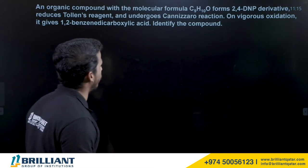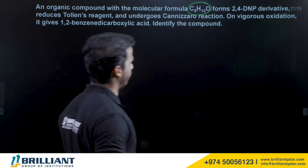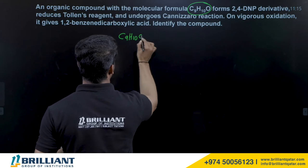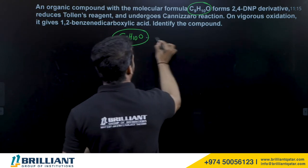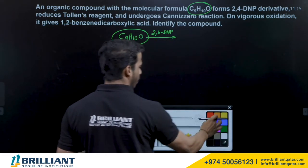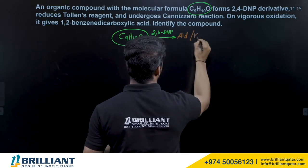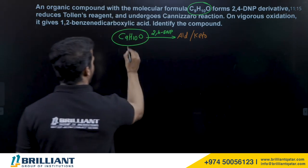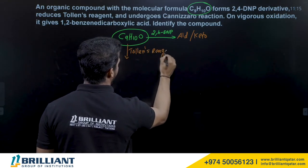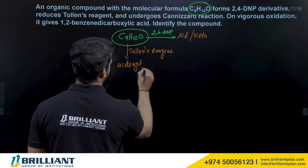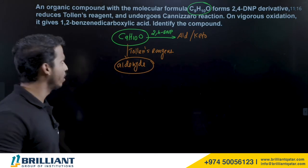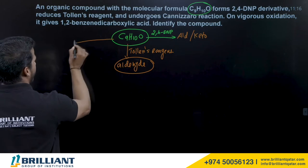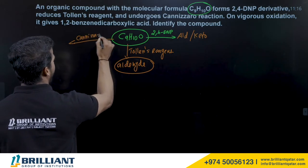An organic compound with molecular formula C9H10O forms a 2,4-DNP derivative, which means it is an aldehyde or ketone. It also reduces Tollens' reagent — Tollens' test is given only by aldehydes — so the compound is confirmed to be an aldehyde, not a ketone.